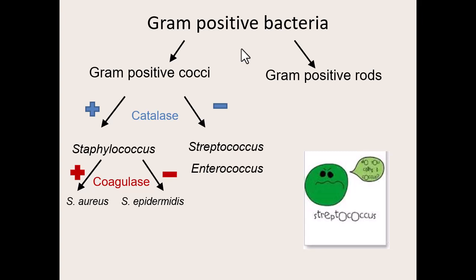That bubbling was because there were some staph bacteria there. Staph bacteria — whether it's Staph epidermidis, which is all over your skin, or Staph aureus — are just going to take that hydrogen peroxide, give it some catalase, and break it down into harmless water and harmless oxygen. So hydrogen peroxide will not kill staph bacteria. If you think there's some Staph aureus and you put hydrogen peroxide on it, it will do nothing. It can kill other things, which is usually what we use it for.